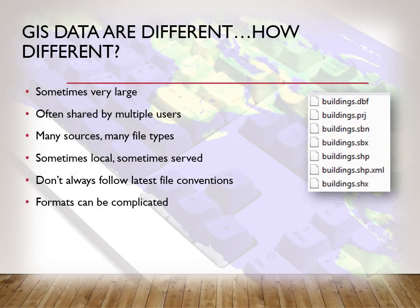GIS data are very different. They're very large, sometimes multiple users are obtaining data, you have lots of different types, you can't really use spaces and certain characters like you can in other files in Windows, and the formatting can actually be quite complicated. If you take a look here on the right side, this is what a building's shapefile would look like if you're using Windows Explorer. There are multiple files, and sometimes depending on projection information or metadata, you might have a different number of files.